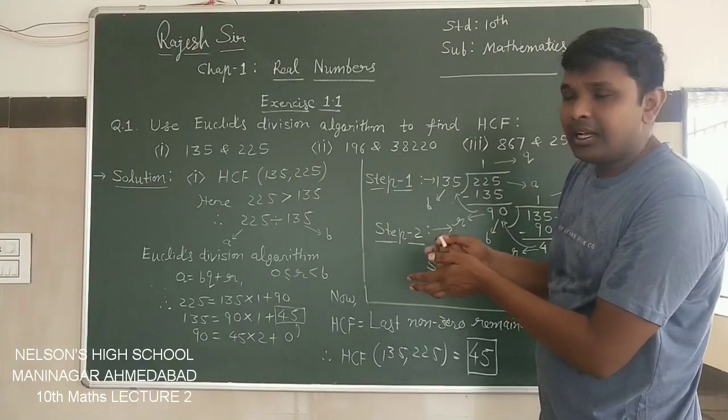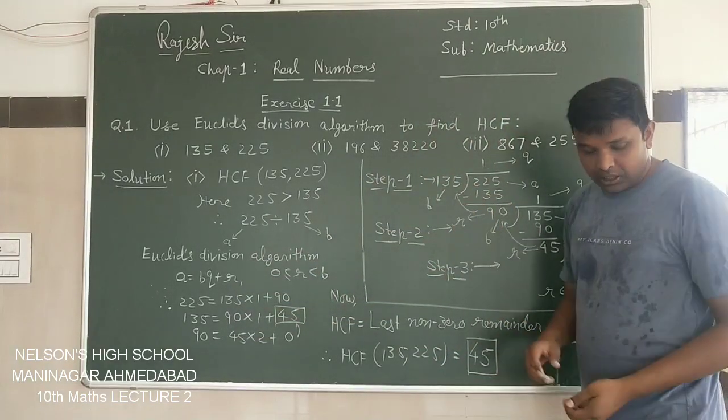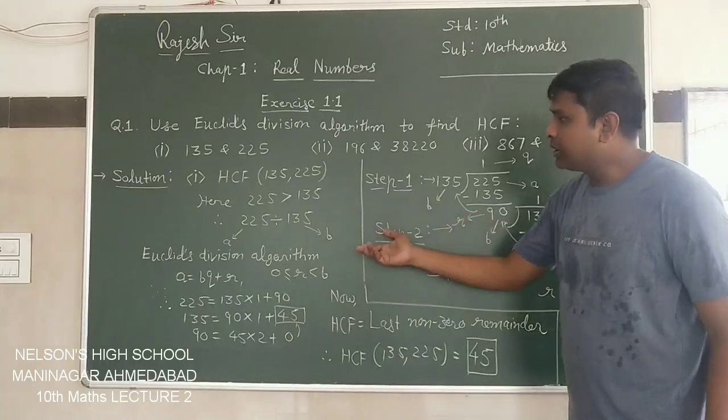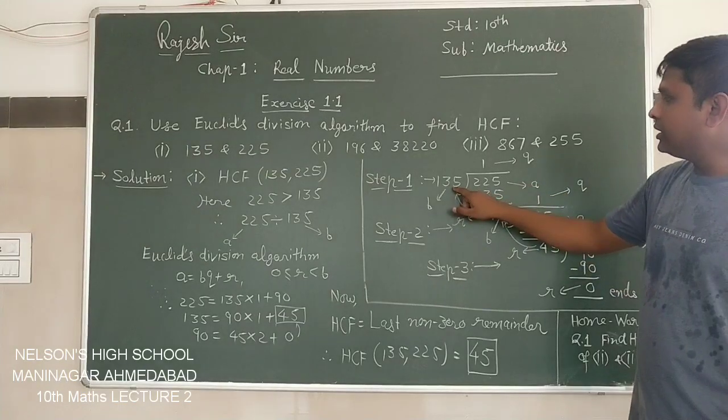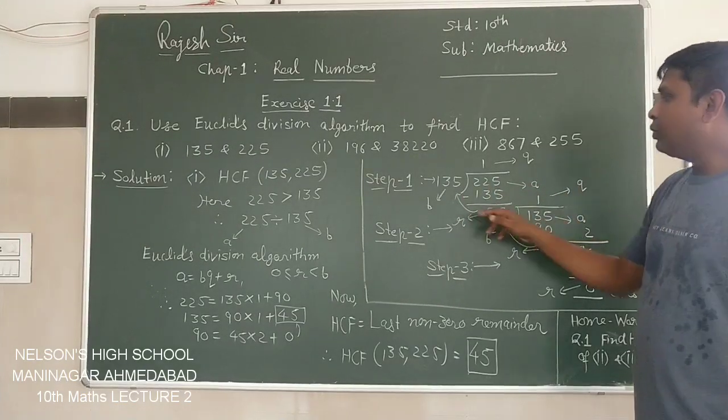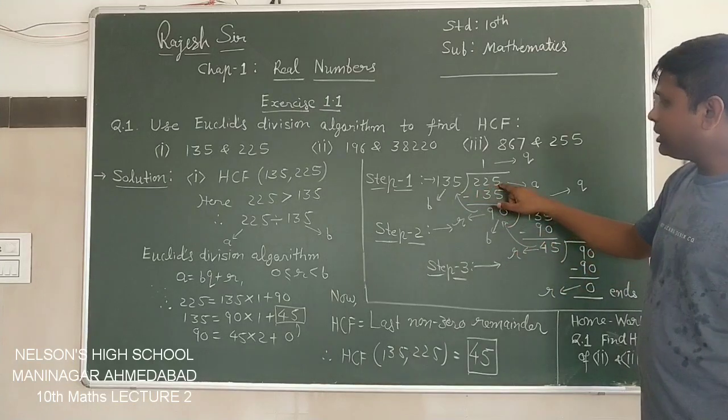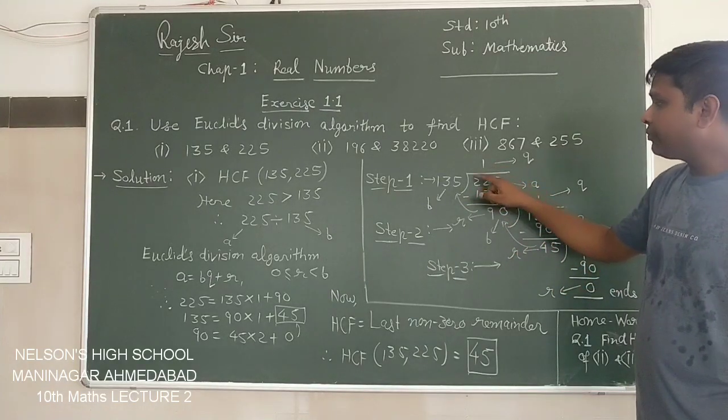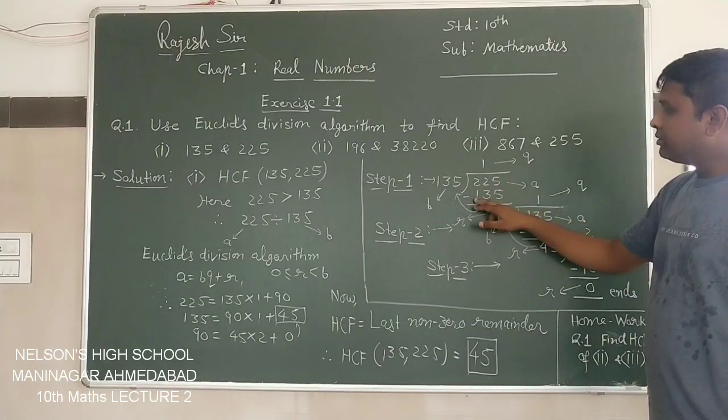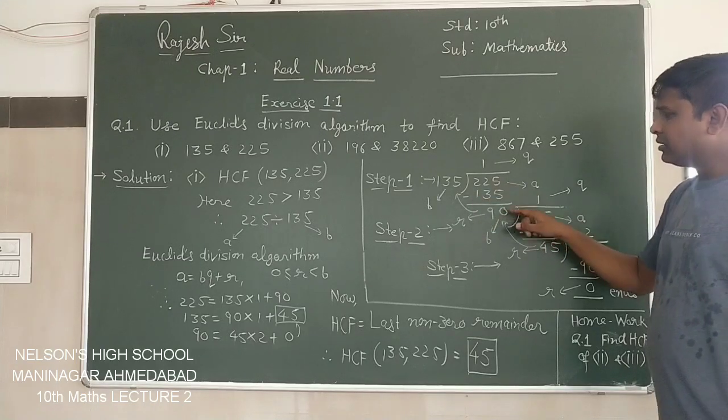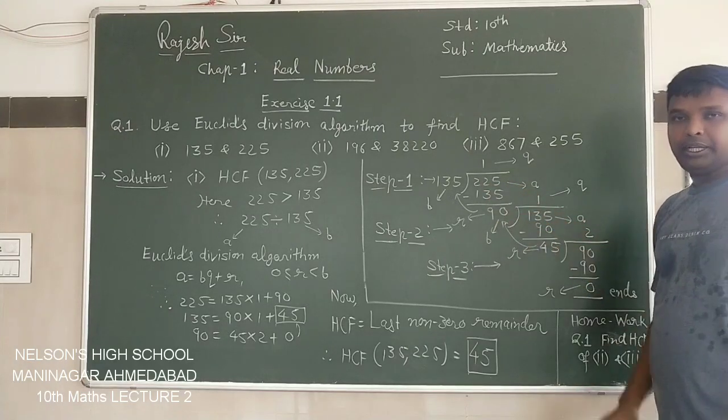Very easy. Like I have done here, you also do. What to do? 135 divides 225, we have to do simple division here. 135 ones are 135, 135 twos are 270, which will be greater than this, so we have to go one side of it. 135 into 1 is 135.